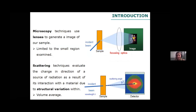Why are scattering techniques so important for investigating the structure of materials or biological samples? Microscopy techniques are typically used to investigate the structure of many types of materials. But they have several issues: first, we are limited to a very small region of the sample, so we never know if that's representative of the whole sample. Secondly, in most cases we need sample preparation — we probably have to dry the sample, which is a big problem, especially when working with carbohydrates.